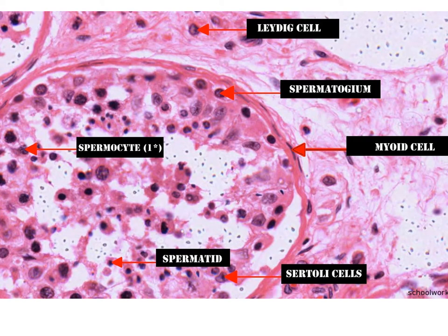Testosterone has several important functions. First, it stimulates spermatogenesis — the production of sperm. It also promotes the maturation of sperm and maintains the overall accessory organs and their secretions. Additionally, it causes the development of secondary sexual characteristics like hair, muscle development, and body size. It creates sexual drive and stimulates the growth and metabolism of the body.